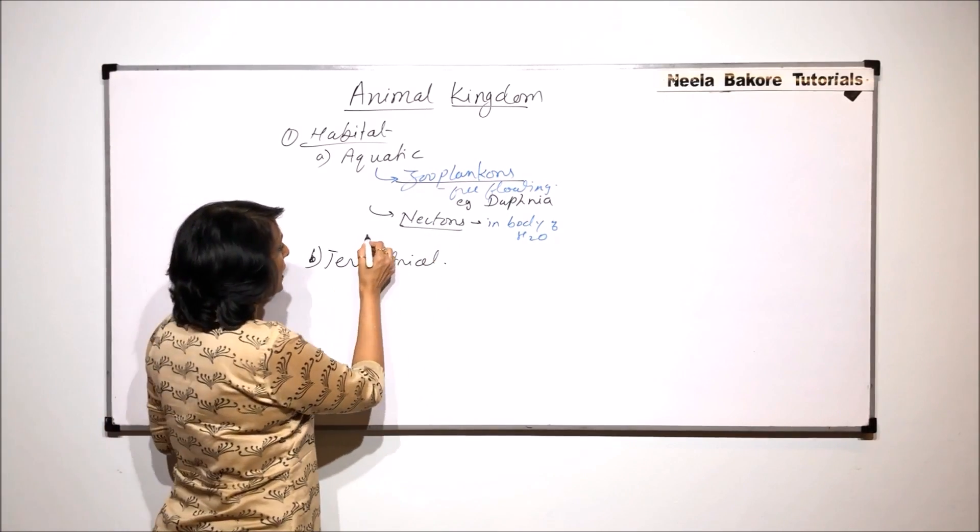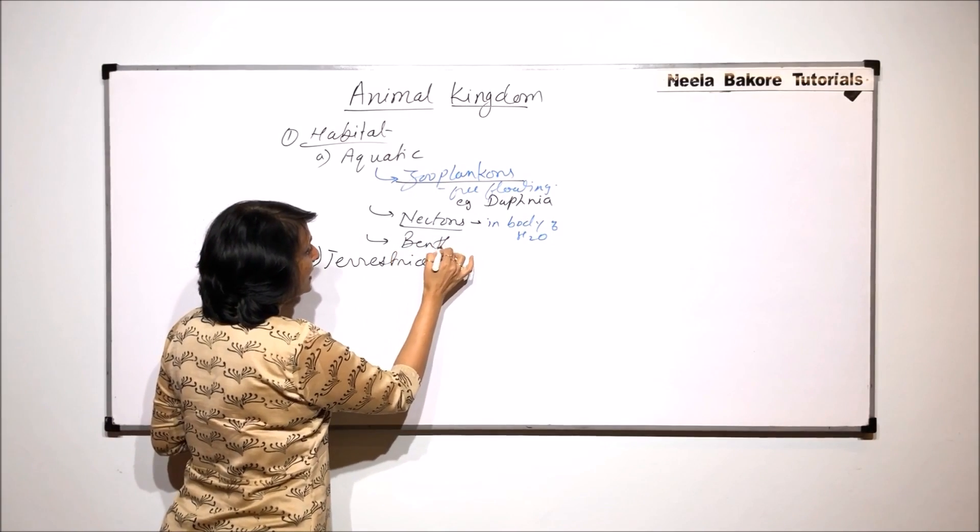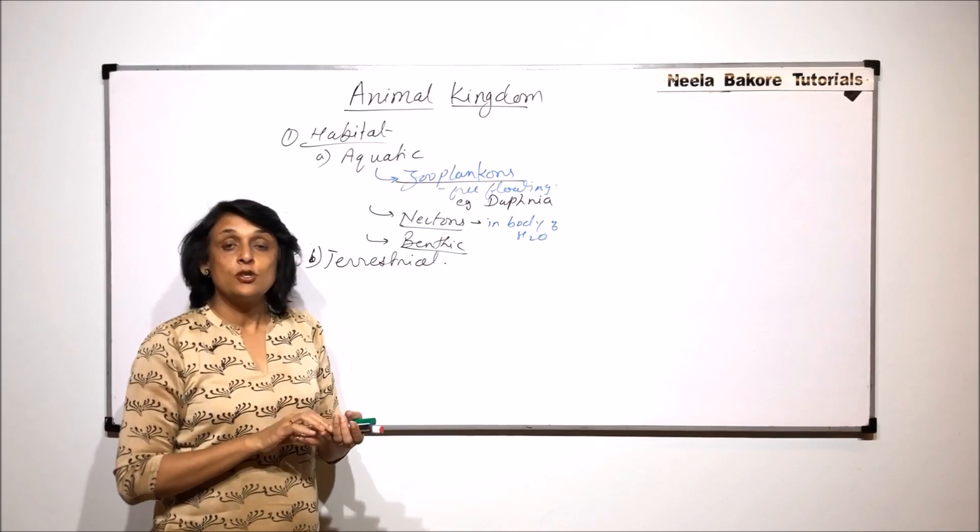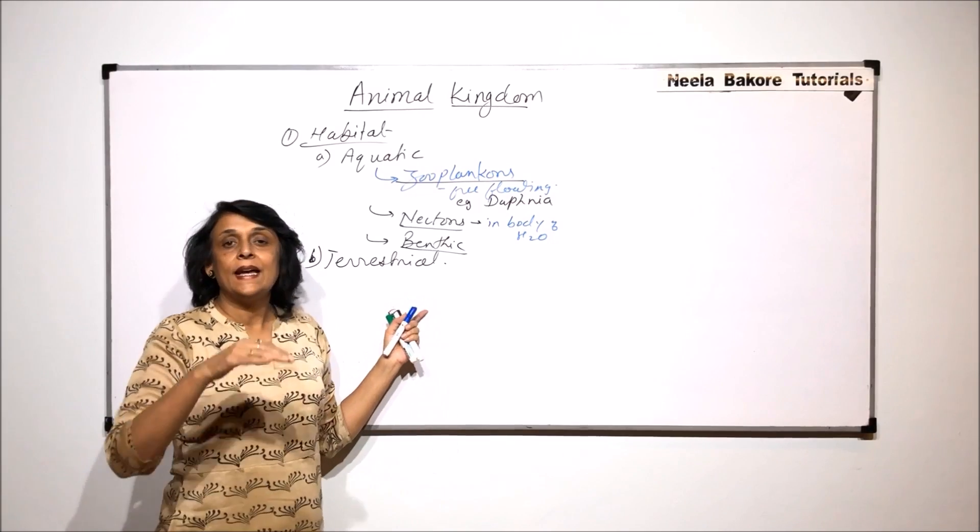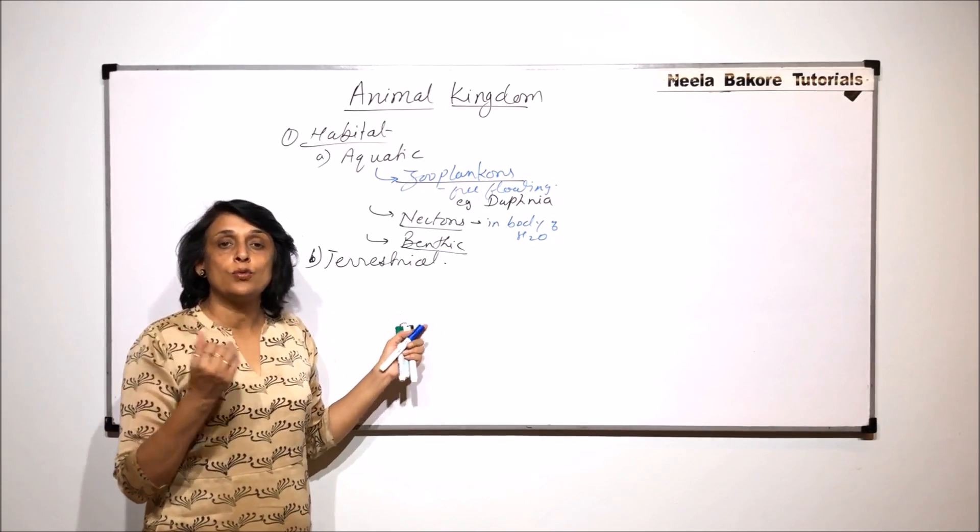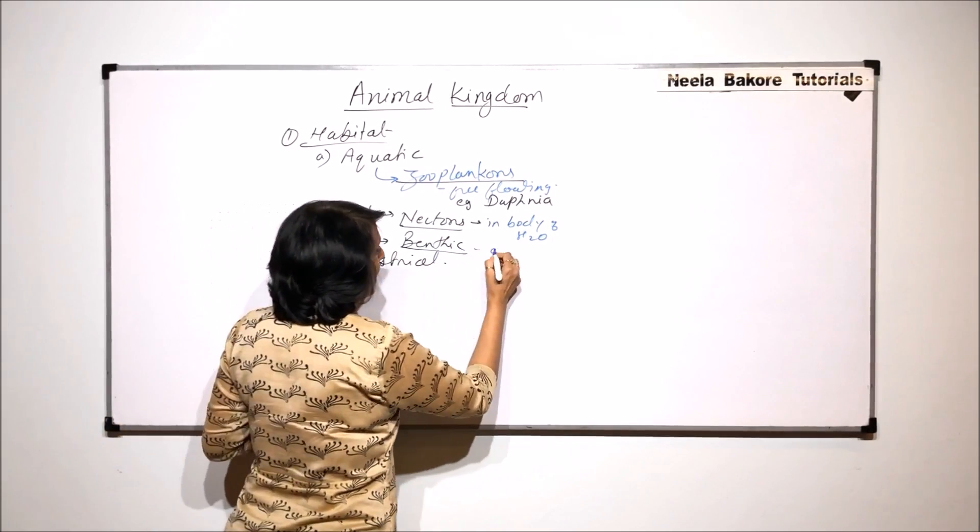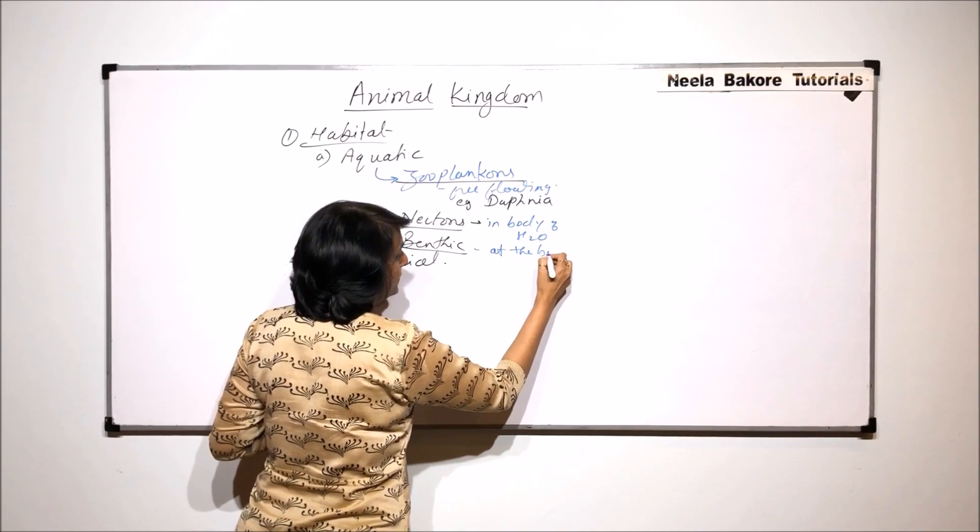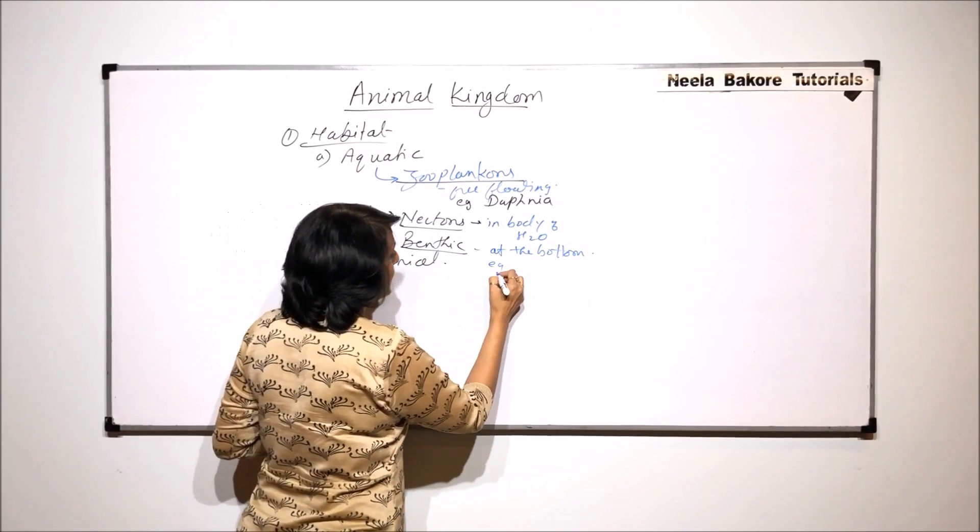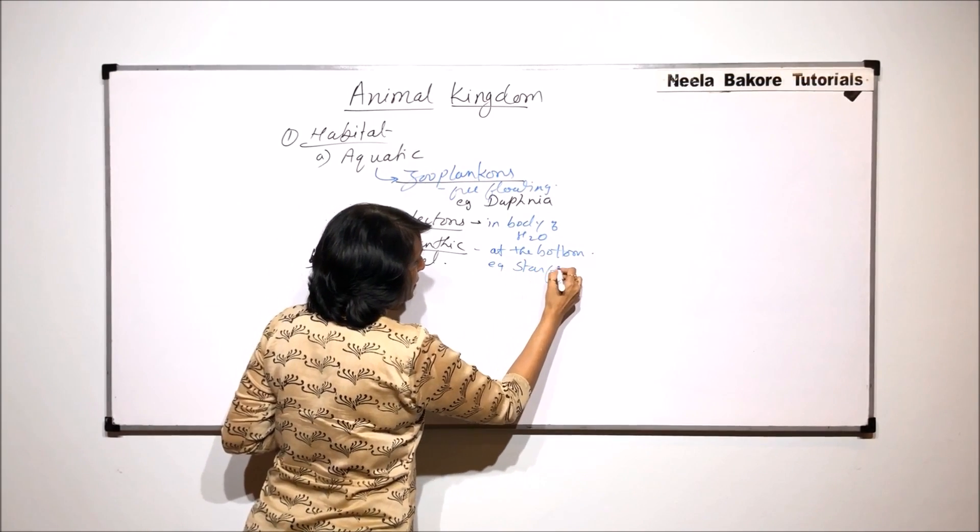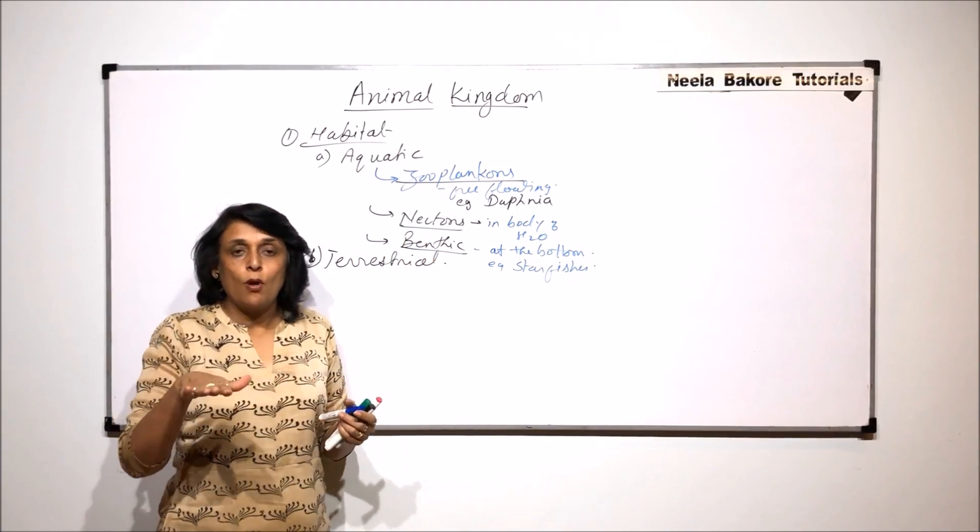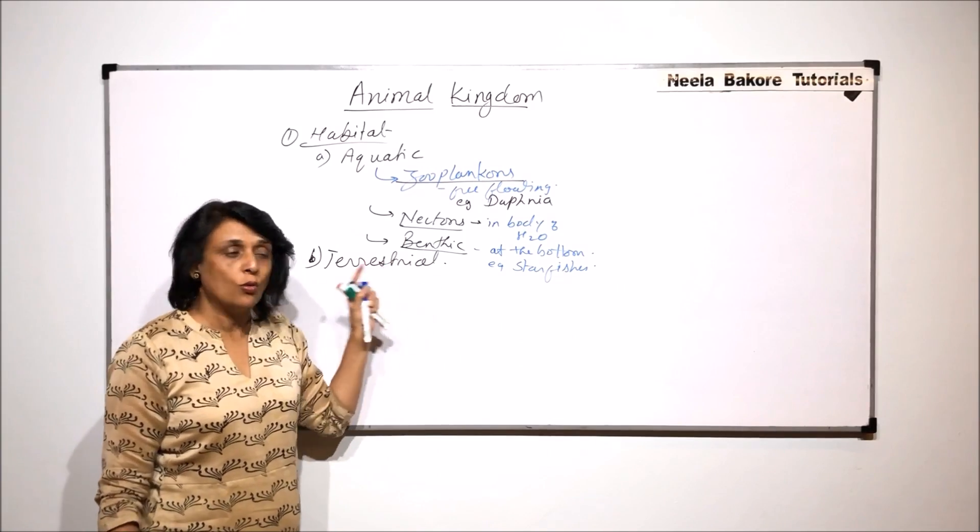And the third one, they are known as benthic. This part is known as benthos. So benthic means they are at the bottom of that water body. If it is an ocean, then they would be found at the ocean bed, at the bottom part. If we have to write example of benthic animals, we can take the example of starfishes. These starfishes are always found on the bottom of the water body or ocean.